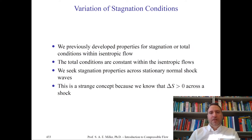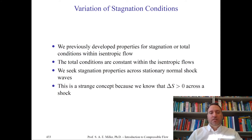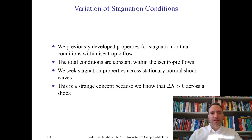Let's get started on the variation of stagnation conditions in normal shock waves. We previously developed properties for stagnation or total conditions with isentropic flow. These same properties might hold before and after a shock if the flow is isentropic before and after. But we showed in our previous class that entropy rises across a shock. So we'll seek stagnation properties across stationary normal shock waves, accounting for the change in entropy.